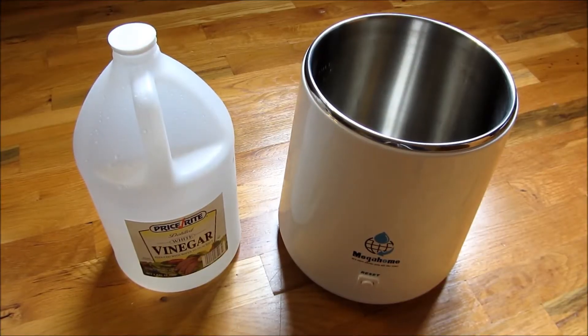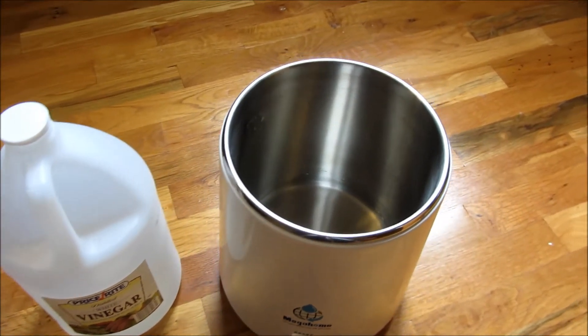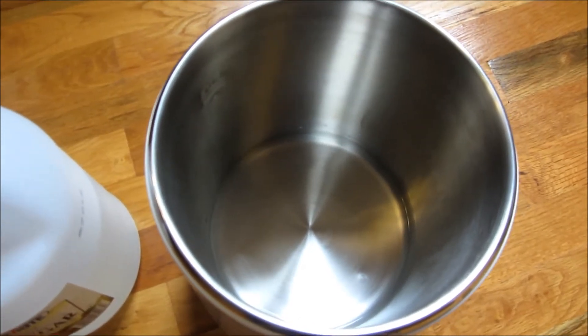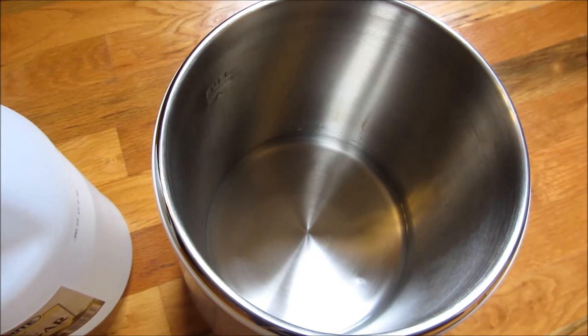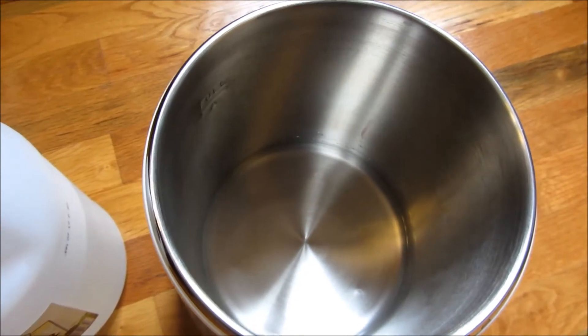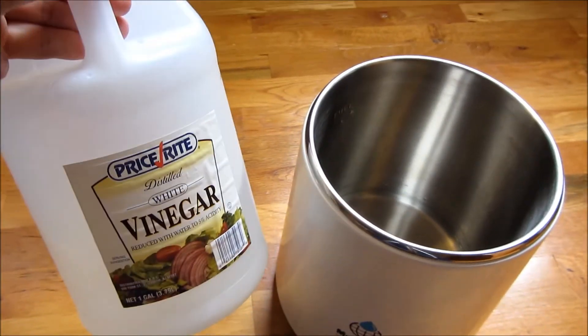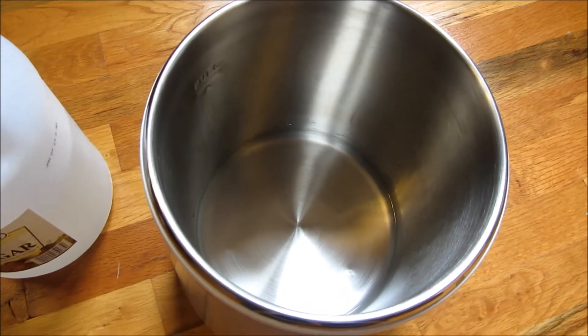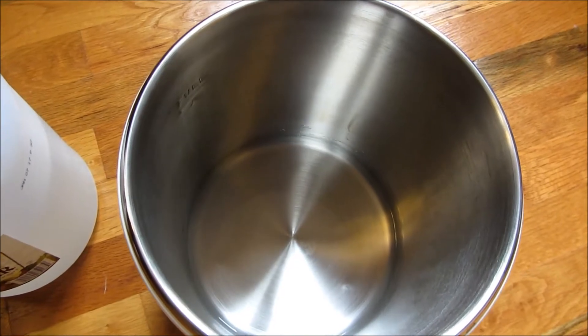So what you saw previously was the gunk collected over a month's worth of use and I'm gonna show you the after, which is a very dramatic difference. So this is me soaking my Mega Home with basically half a cup of vinegar. So this is the half cup of vinegar that I put in along with half a cup of water, and what I did was I ended up actually soaking this overnight and you see how clean it is.